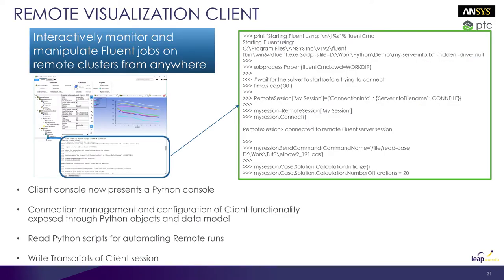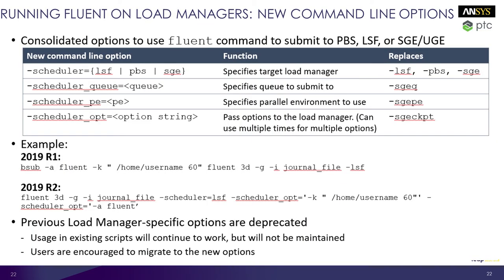Many more people need to run jobs on a cluster because they're doing bigger jobs, particularly unsteady turbulence. We showed in a previous release how you could interact with those jobs while running. That's been extended — you can send more commands through from the remote visualization client, all scripted in Python. Also, when running across a load manager, we've cleaned up how you set up Fluent and what commands you give to send things off to a scheduler.